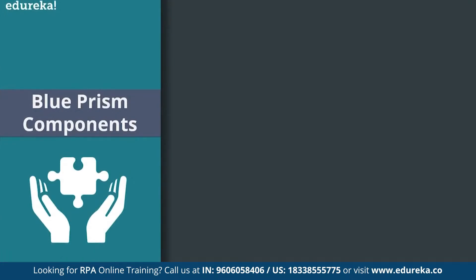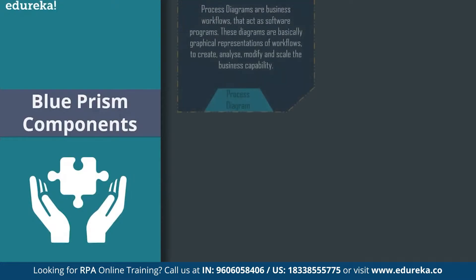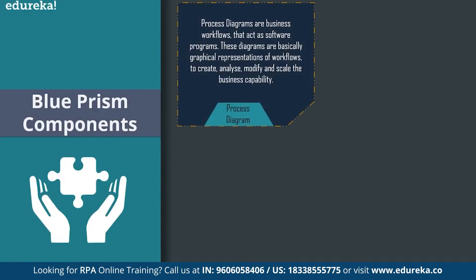Now let me quickly cover the main components of Blue Prism. There are mainly four components: the process diagram, the process studio, the object studio, and the application modeler. Process diagrams are basically business workflows that act as software programs. Since Blue Prism is based on Java, these diagrams utilize core programming concepts and create operational process flows like flowcharts. These diagrams are graphical representations of workflows to create, analyze, modify, and scale the business capabilities.